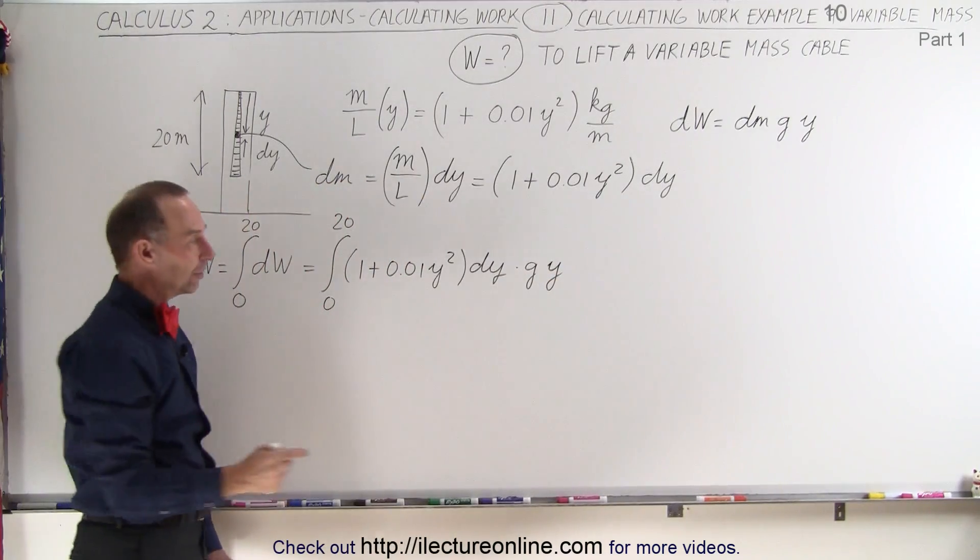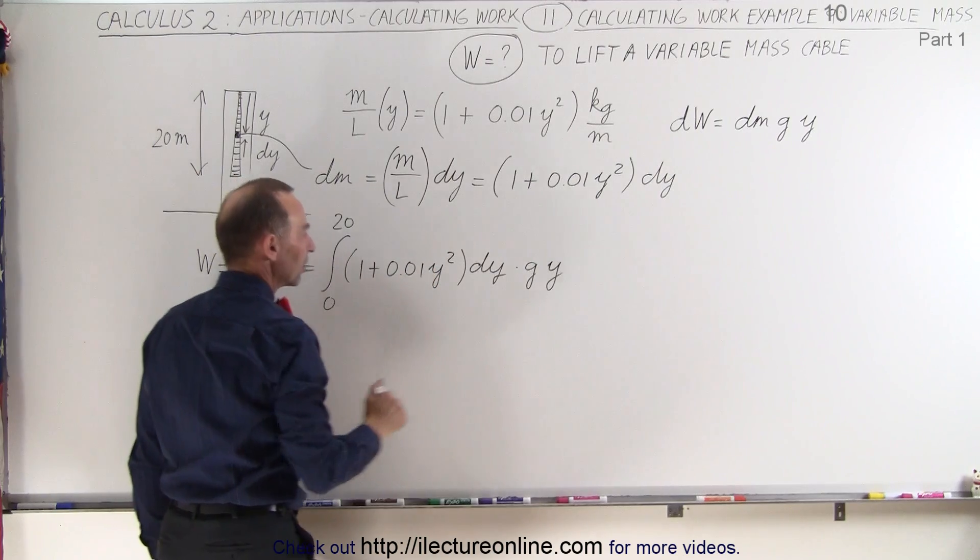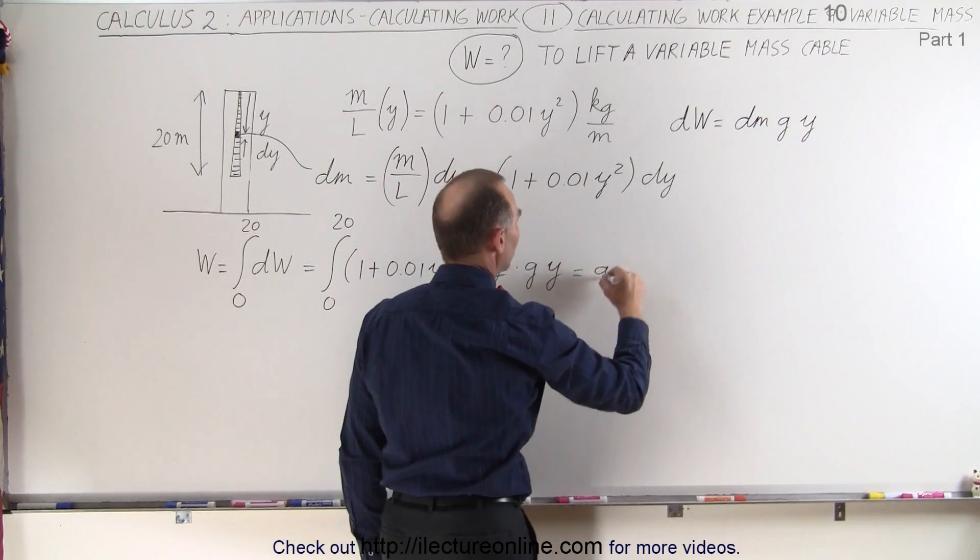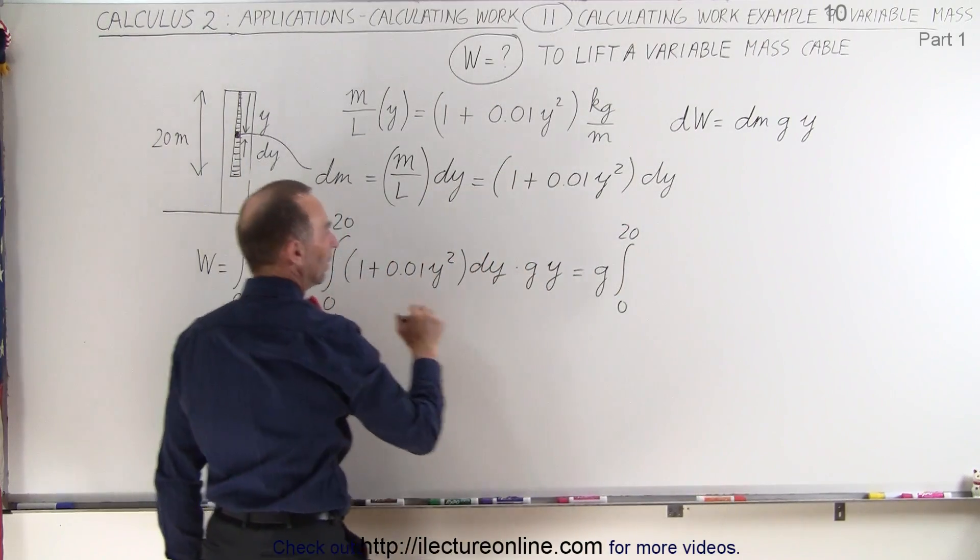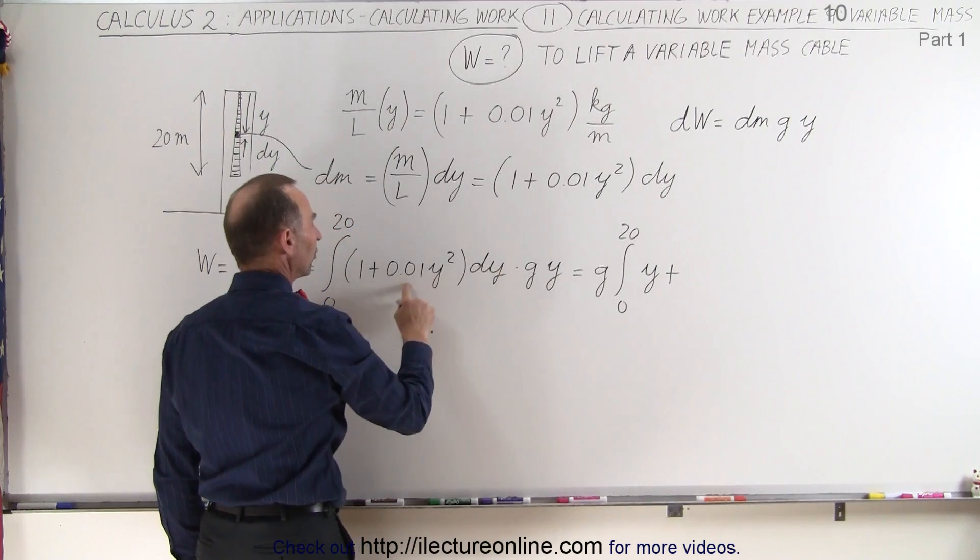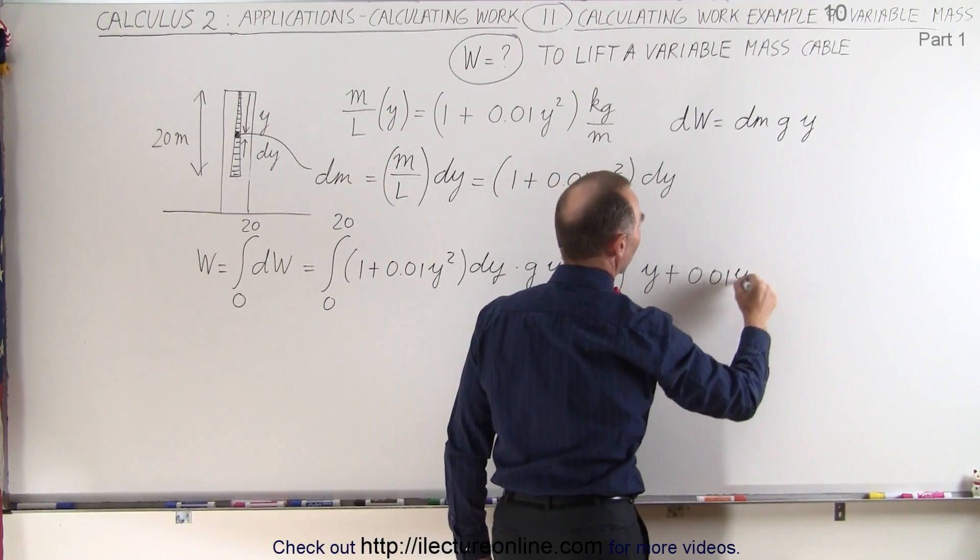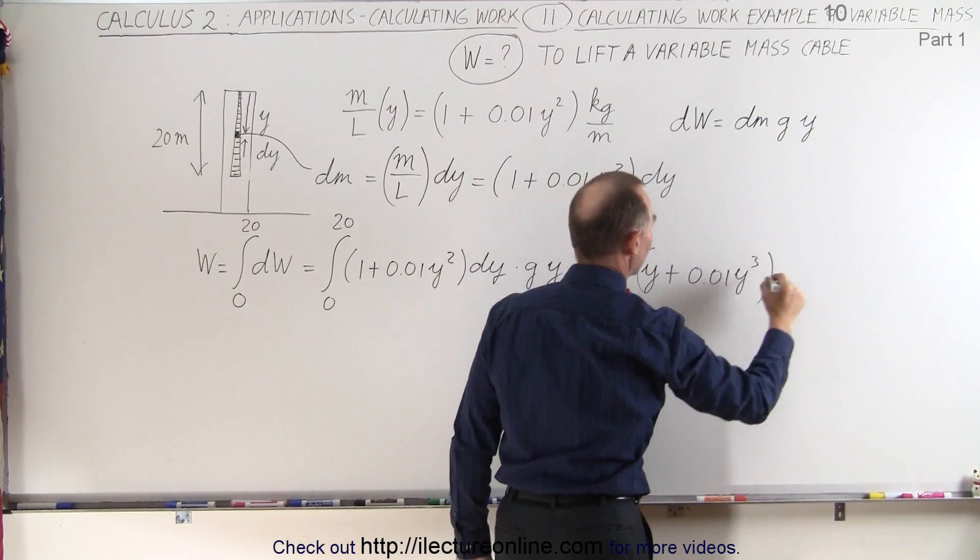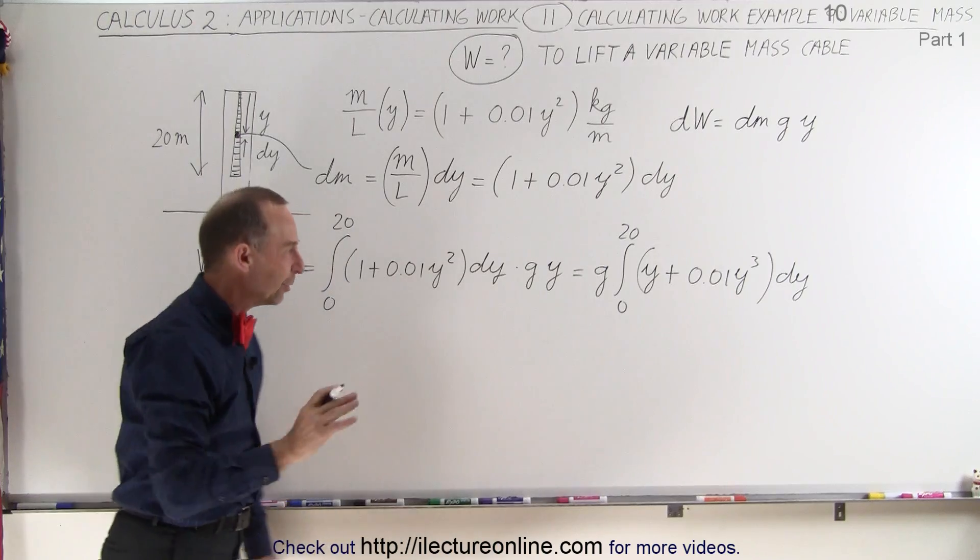So we can pull out the constant g. We can multiply the y times each of the two terms in here. So this becomes equal to g times the integral from 0 to 20 of y times 1, which is y plus y times 0.01y squared. This becomes 0.01y cubed. And that will then be multiplied times dy. We can now go ahead and integrate that.